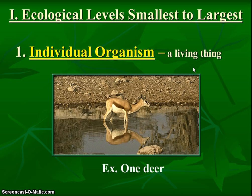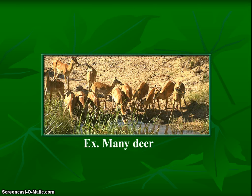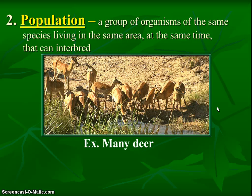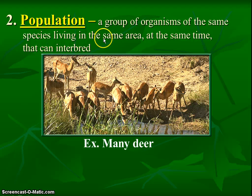The next thing is taking a zoom out from just that one deer. When we have more than just one deer, we literally just have many deer — that's what we would see if we zoomed our camera out. We no longer call this an individual organism, because there's more than just one deer. We call this a population. Number two: population. A population is a group of organisms of the same species, living in the same area at the same time, and can interbreed, which means they can reproduce.